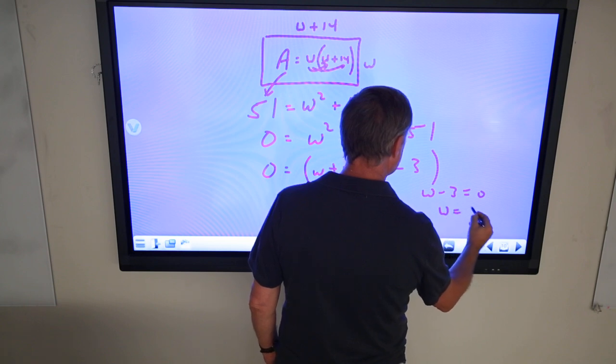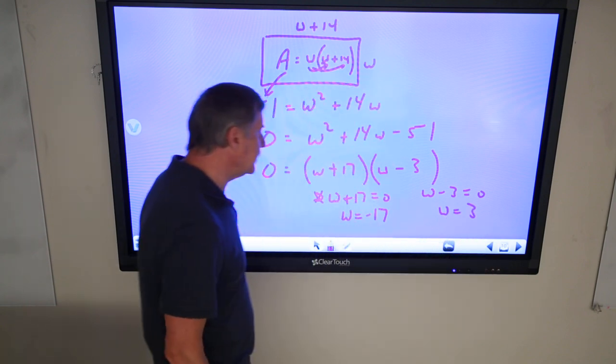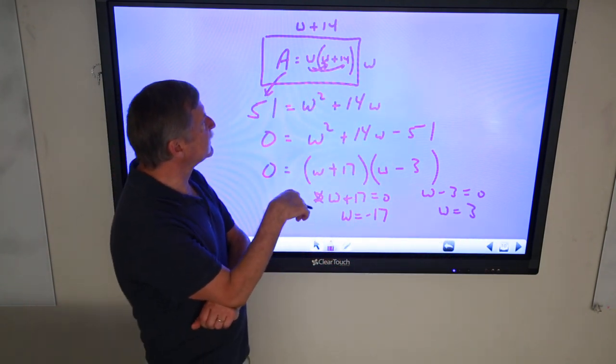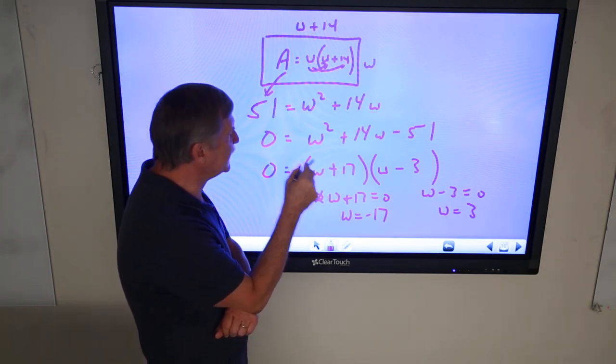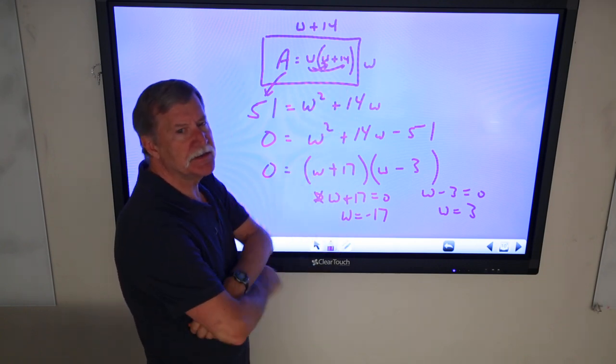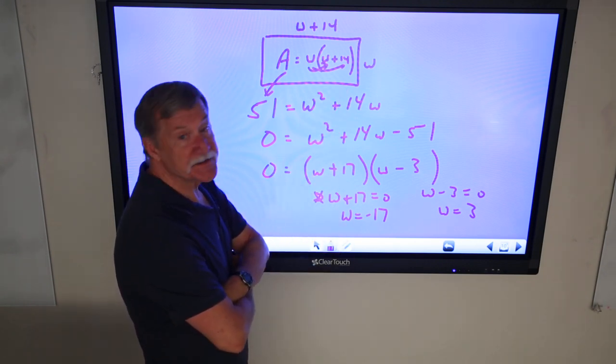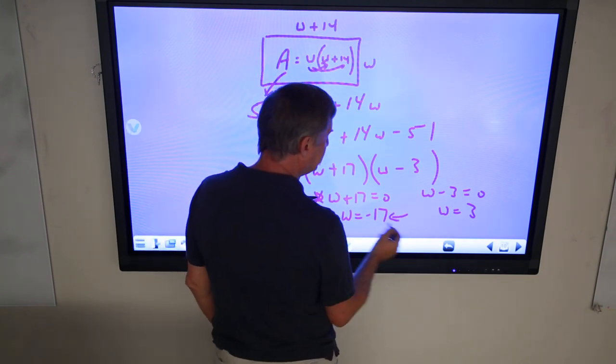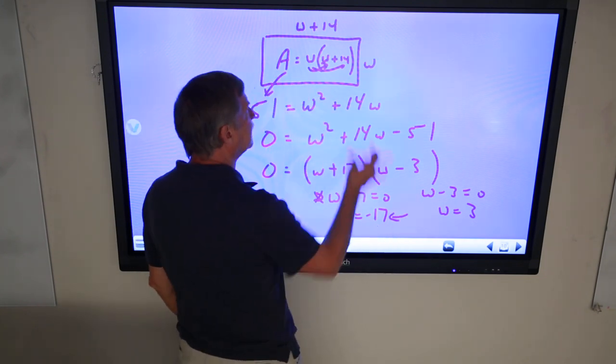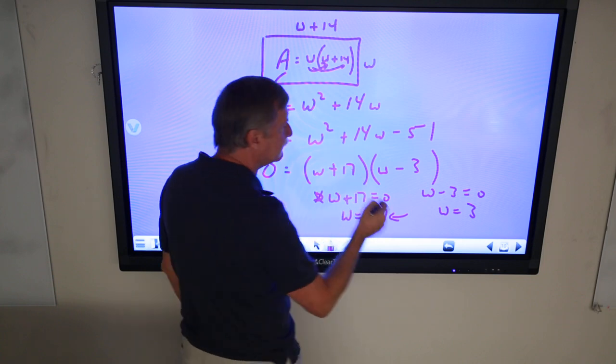Well, minus 17 might work here, alright, but a width W of minus 17, in reality, that's not going to work. And so, we say that minus 17 being negative and applied to a unit of measurement, we say, is extraneous, not a solution.